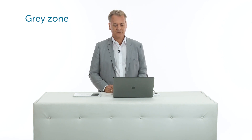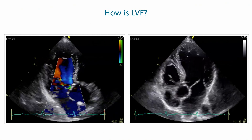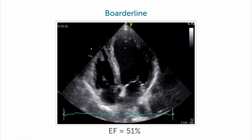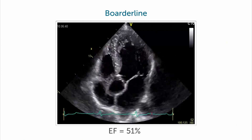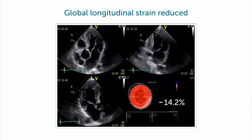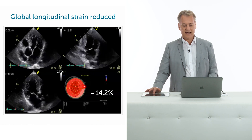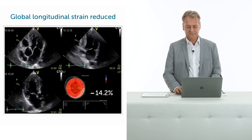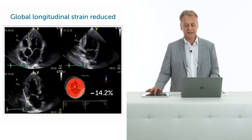Next case — how is ejection fraction in this patient? Again significant aortic regurgitation. The ventricle is small and it does look borderline. If you look at the ejection fraction we get 51%, but it's still above the cutoff value. This is his strain — it's 14.2. It's a lot less than the previous patient and it is definitely discrepant from the ejection fraction. Again you see that there is a reduction of strain more at the base than at the apex.